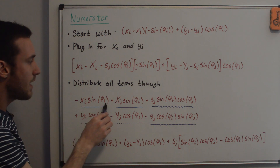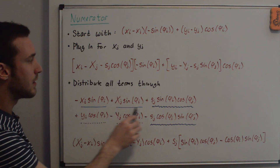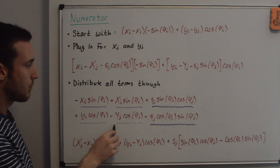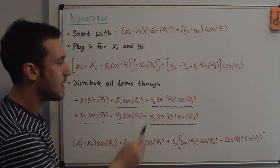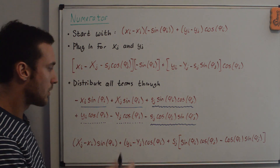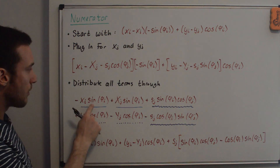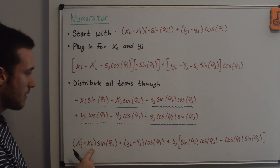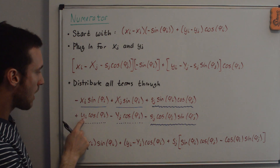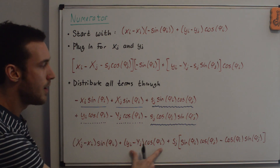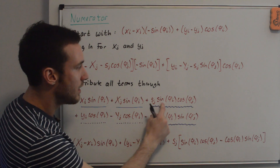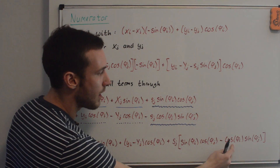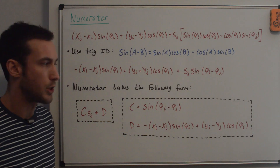Grouping like terms: the sin(phi_i) terms together (solid blue lines), the cos(phi_i) terms together (dashed purple lines), and the s_j terms together (squiggly blue lines). The sin(phi_i) group gives (X_j - x_i), the cos(phi_i) group gives (y_i - Y_j), and for the s_j terms we have sin(phi_i)cos(phi_j) minus cos(phi_i)sin(phi_j).